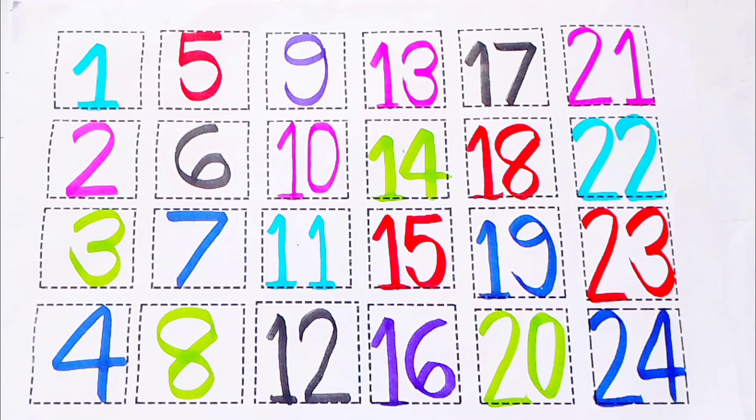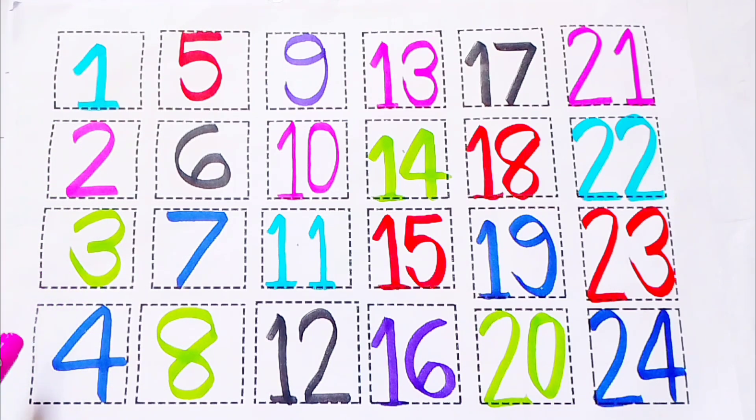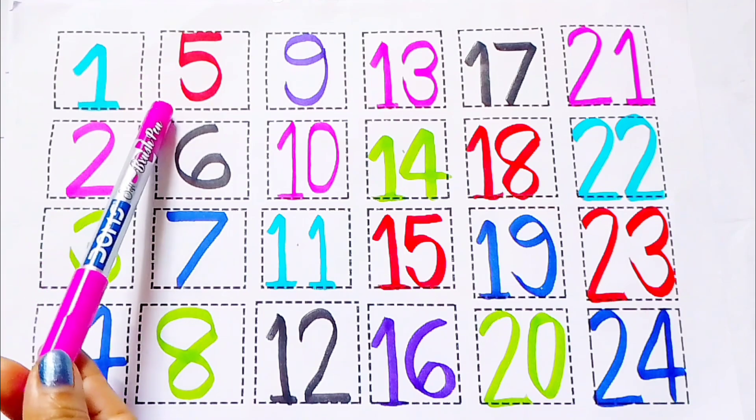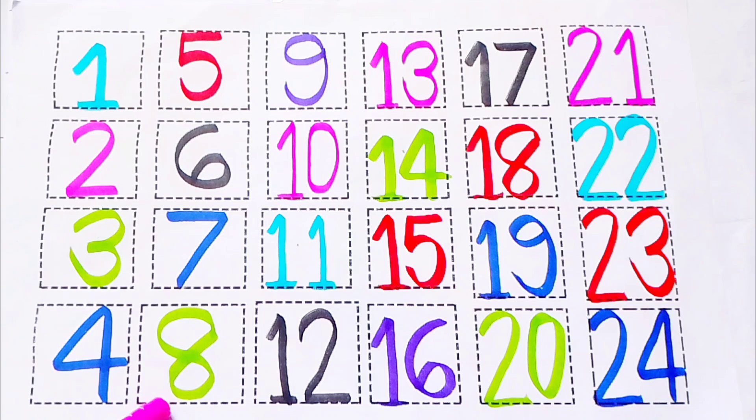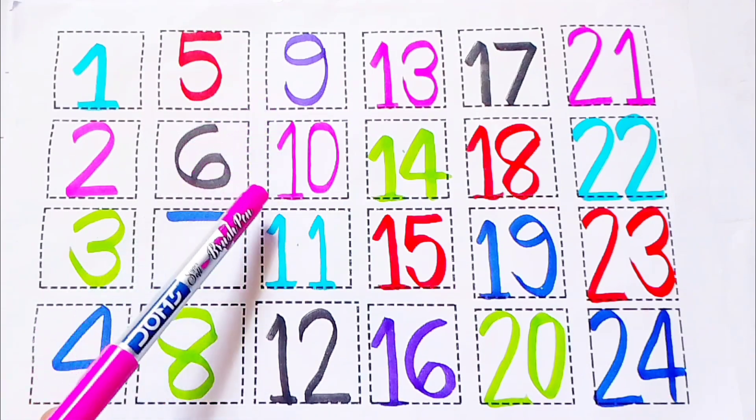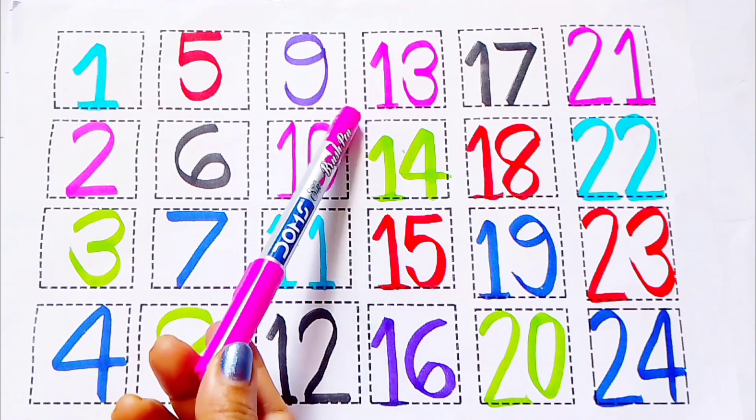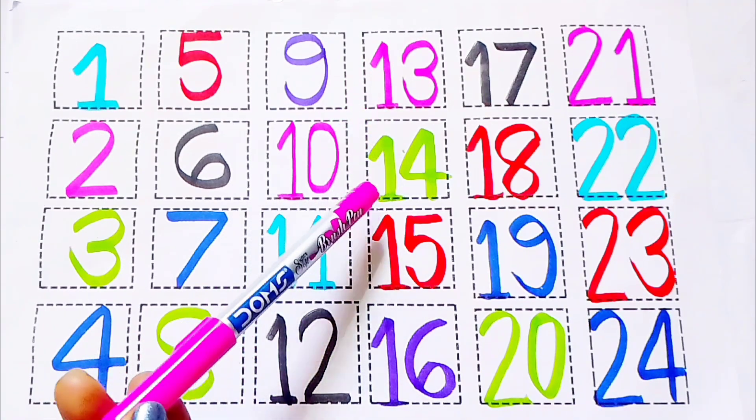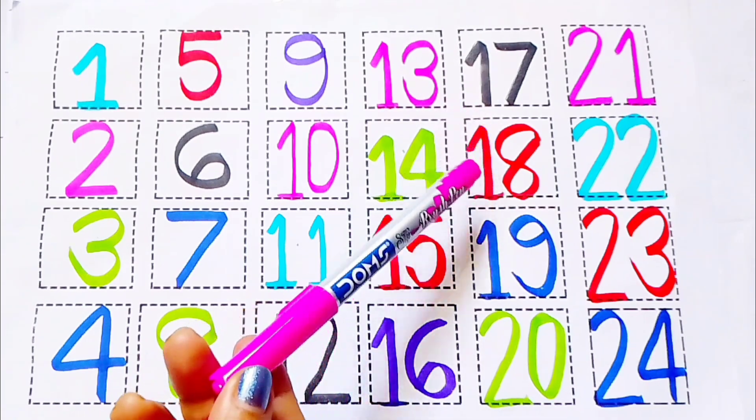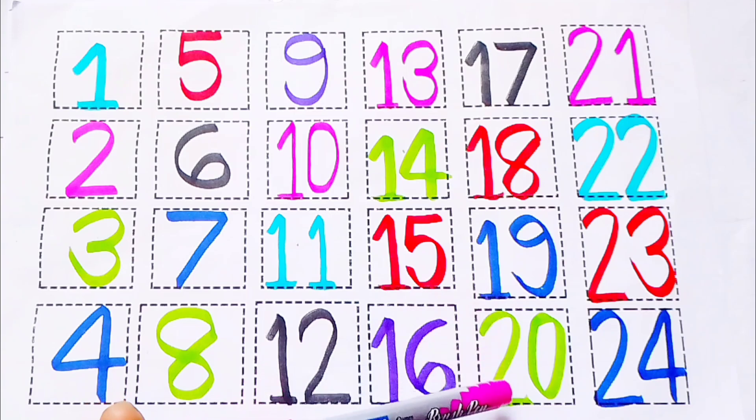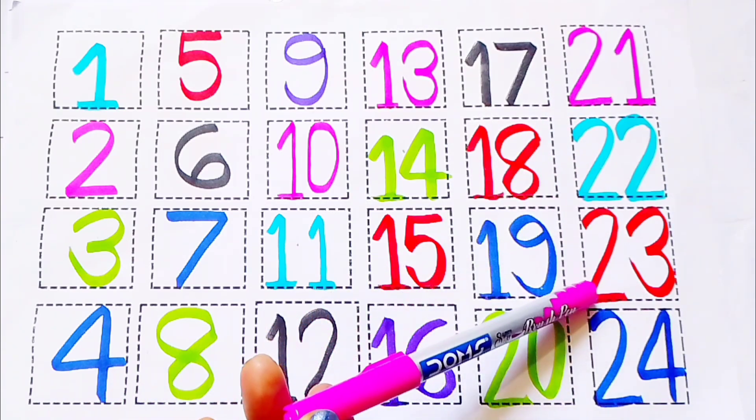Learning spelling. One, two, three, four, five, six, seven, eight, nine, ten, eleven, twelve, thirteen, fourteen, fourteen, fifteen, sixteen, seventeen, eighteen, nineteen, twenty, twenty-one, twenty-two, twenty-three, twenty-four. T, W, E, N, T, Y. Twenty.